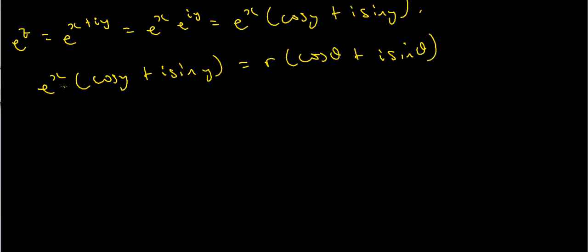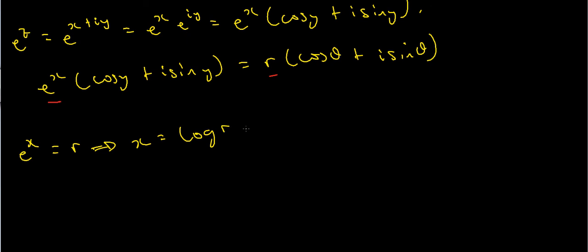Clearly I have to have e to the x equals r. Now x is a real number and r is also a real number — in fact it's positive, since I took w to be non-zero. So I can just take logarithms of both sides, dealing only with real numbers. I get x equals the natural log of r, and the natural log of r is just the natural log of the modulus of w. So now I've found an expression for x.